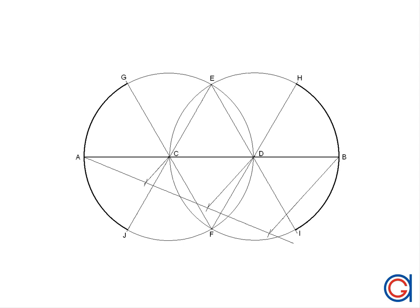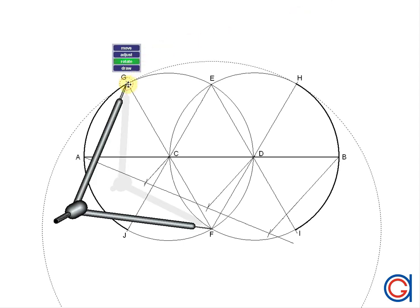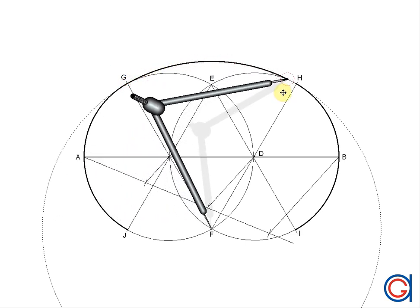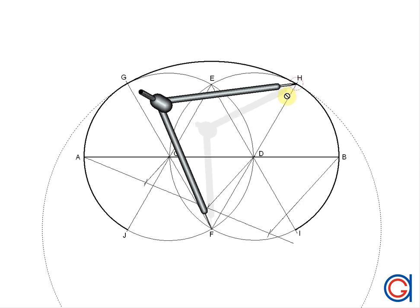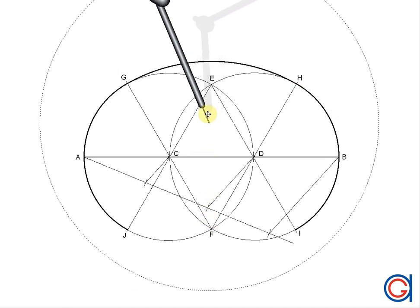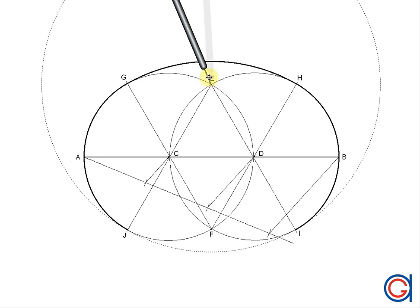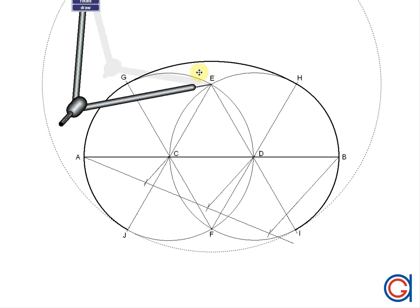And now we are going to draw the last two arcs of our oval. First setting our compass on point F and radius FG we join points G to H which are the tangent points. And now setting our compass on point E and radius EJ we join the last two tangent points J to I.